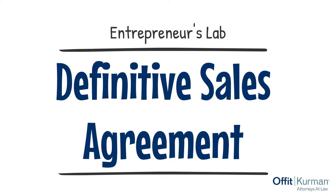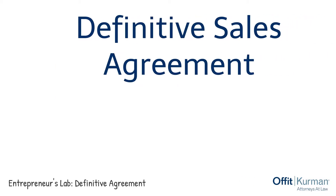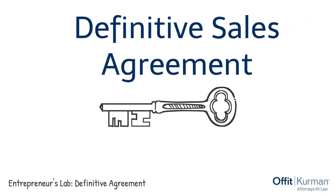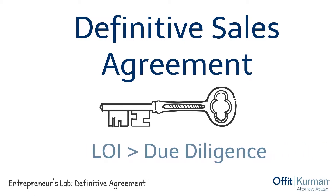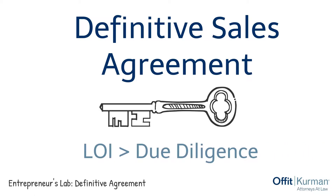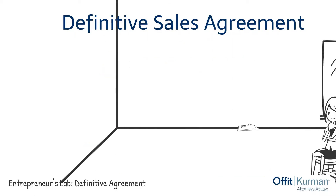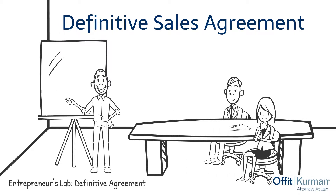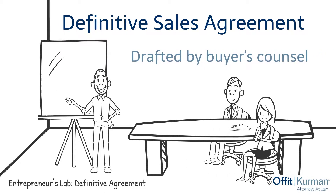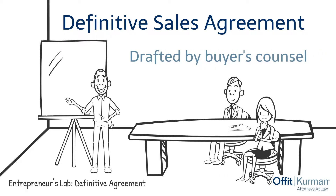Hi, I'm Mike Mercurio, and this is the Entrepreneur's Lab. Definitive Sales Agreement. The sales agreement is the key document for the seller in a transaction. It encompasses the hard work of the parties from LOI through diligence. The definitive agreement typically will be drafted by the buyer's counsel and will be a large document with many moving parts. A few of the key parts are as follows.